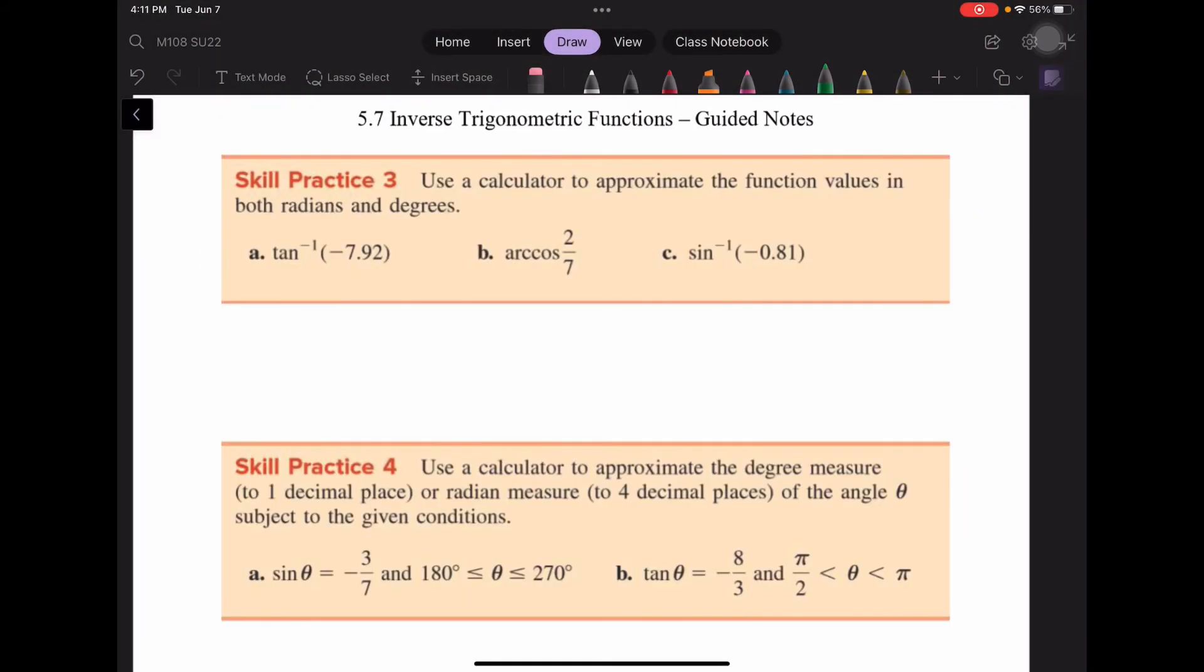Using a calculator to approximate the function values in radians and degrees, make sure that you are calculating with the mode in radians and with the mode in degrees. So I would do all three of these in one mode, and then I would switch to the other mode. I'm going to start off with degrees, and in my calculator, I'm going to press the second button and the tangent button, and then enter negative 7.92. And for that, I get negative 82.804.